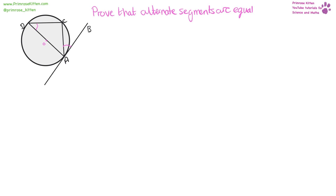We are going to prove that this angle here is equal to this angle here. First of all, I'm going to call this angle X, so the angle C, A, B equals X. Because this line is a radius and this line is a tangent, we know that the angle D, A, B equals 90 degrees. From that we can work out that the angle D, A, C is going to equal 90 minus X.